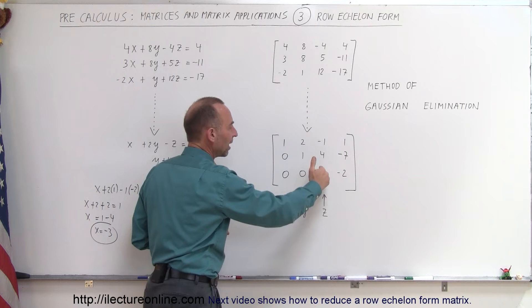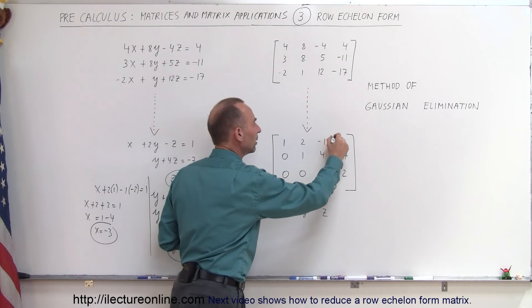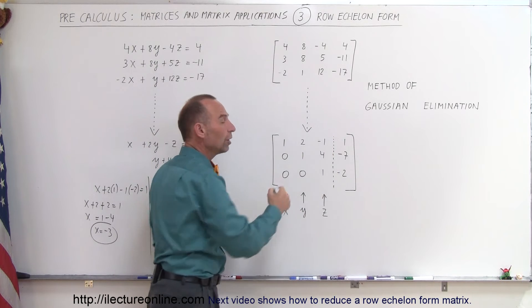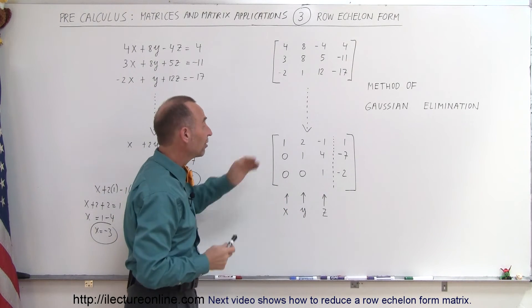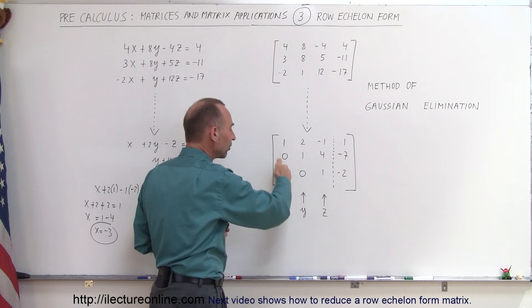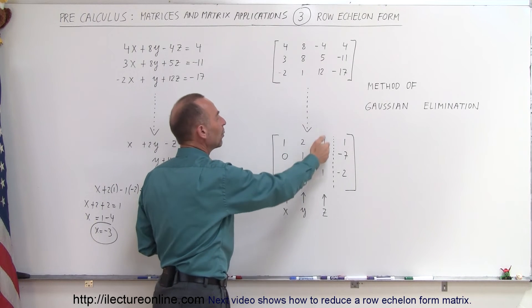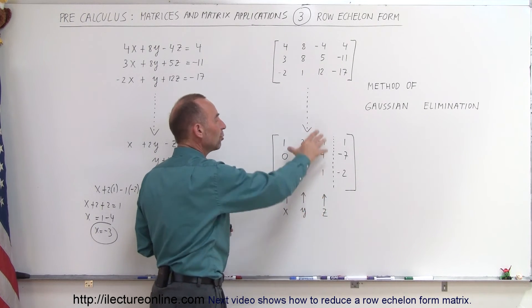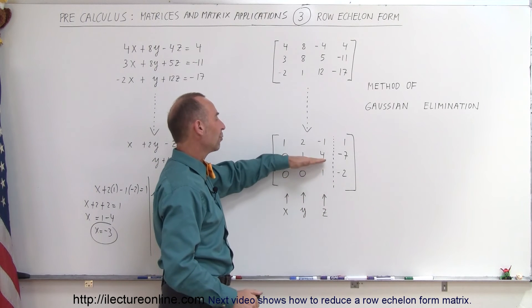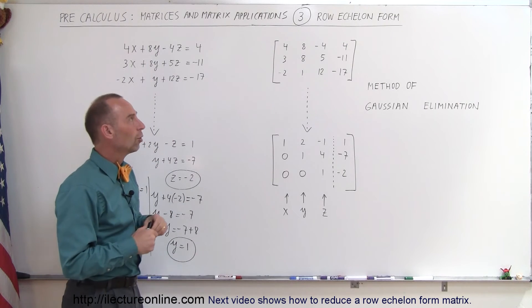Which means we have 1s across the diagonal if we don't include the augmented portion of the matrix. Notice we just only include the coefficients of the x, y, z variables. We have 1s across the diagonal, 0s everywhere here on the left, bottom left corner, and we can have numbers on the upper right corner which we can easily solve one by one by plugging the value for z, for y, and then finally finding the value for x.